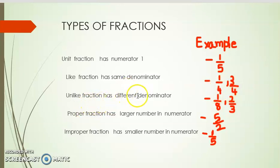Unlike fraction has different denominator. Comparing these 2 fractions 1 by 8 and 2 by 3, they have different denominators: 8 and 3. So it is called unlike fractions.